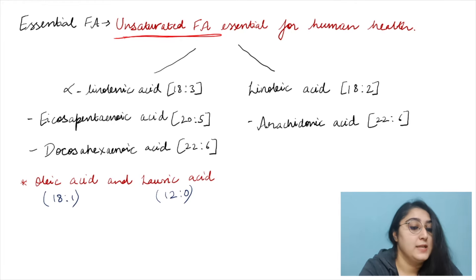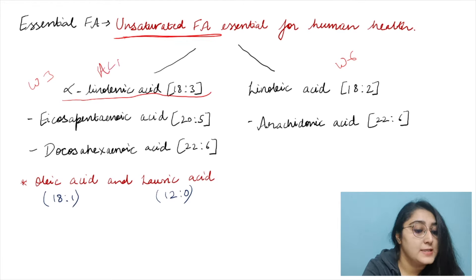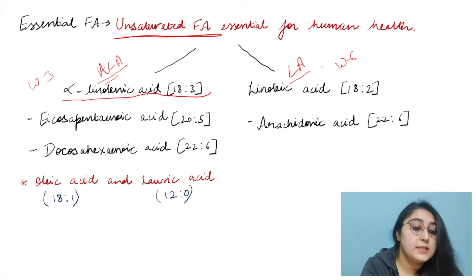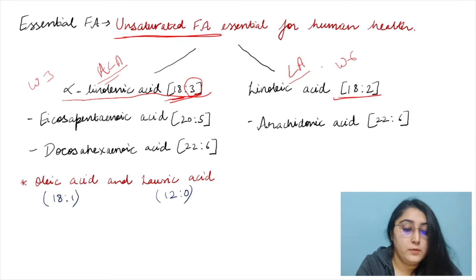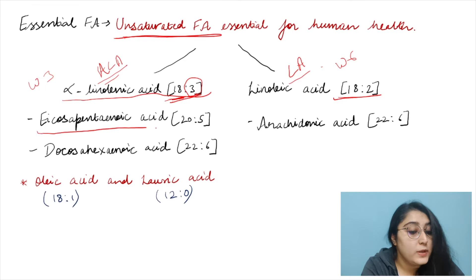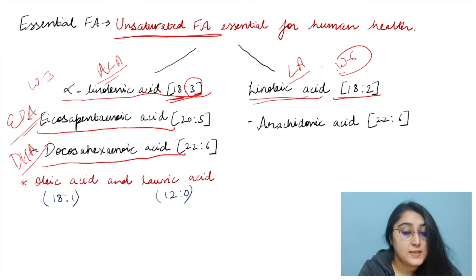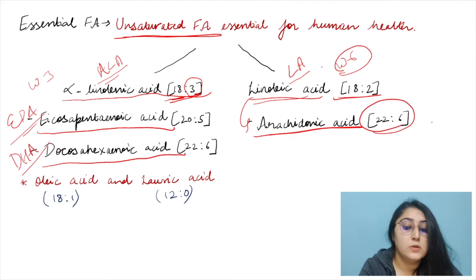There are two essential fatty acids: omega-3, alpha-linolenic acid (ALA), with 18 carbons and three double bonds; and omega-6, linoleic acid (LA), with 18 carbons and two double bonds. In the body, ALA converts to EPA and DHA, while linoleic acid converts to arachidonic acid.